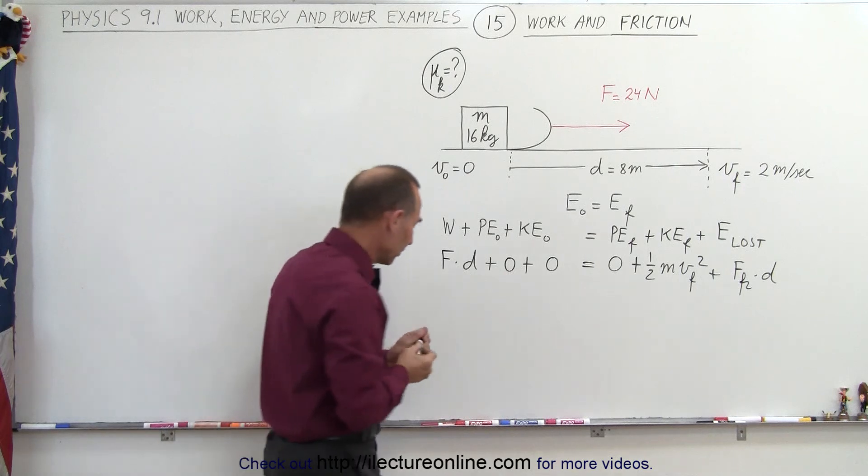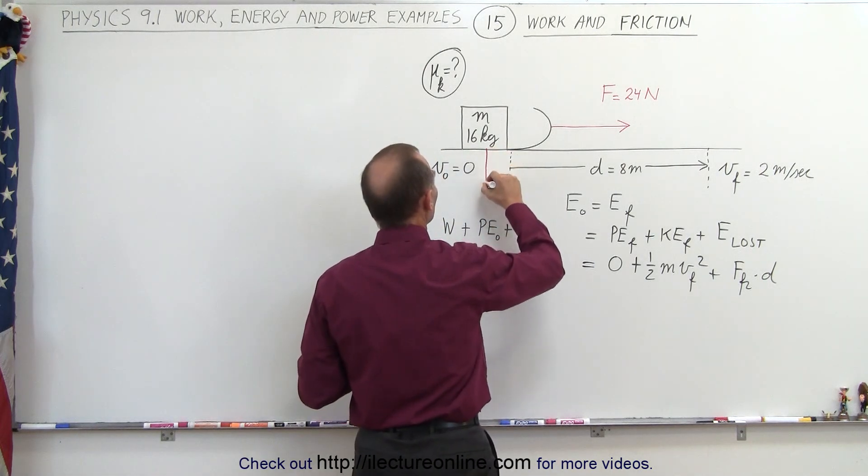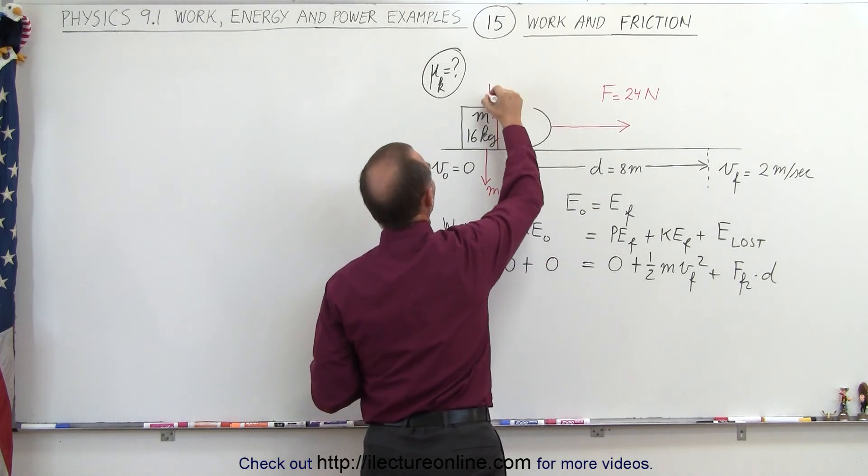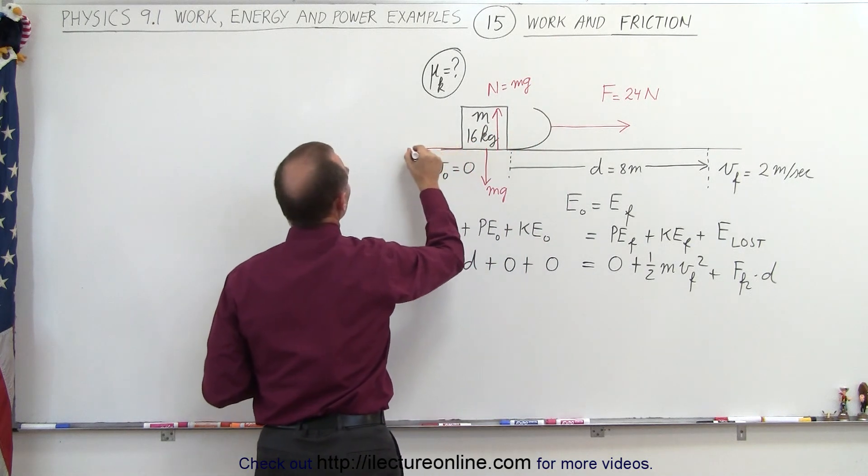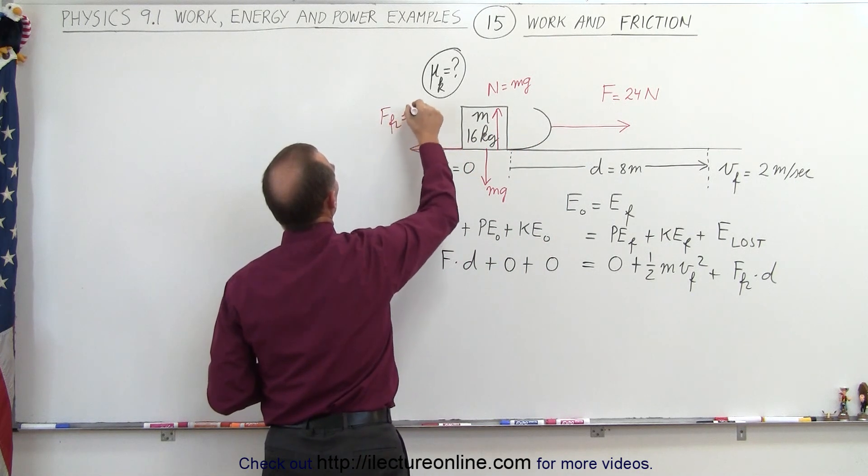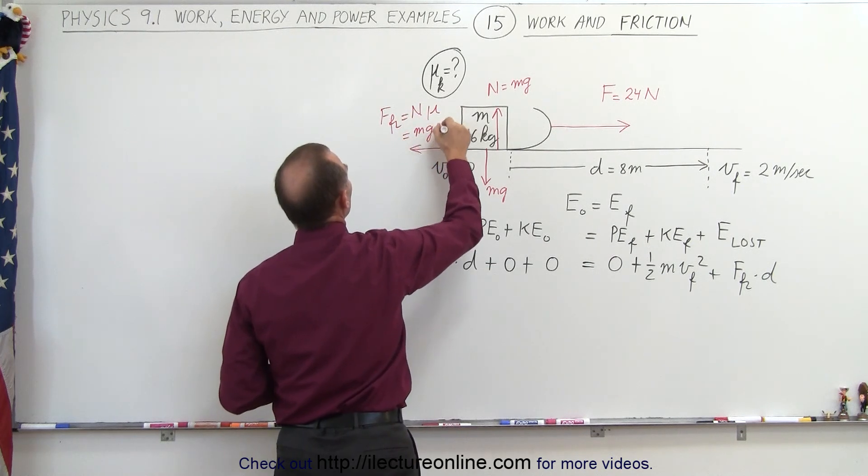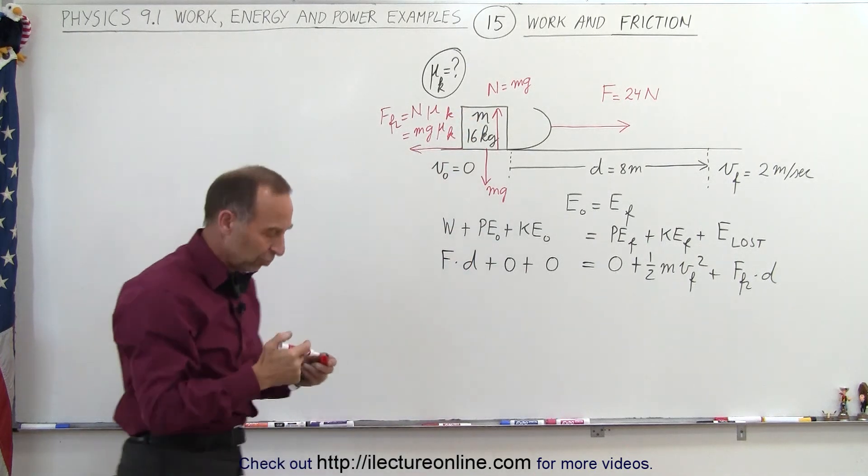How do you find the friction force? Well, first what we realize is that there's some weight pushing down on the ground, mg. There's a normal force pushing back, which is equal to the weight of the sled mg. And therefore, there's a friction force which is equal to the normal force times mu, which in this case is mg mu. And of course, we talk about mu sub k because the sled is moving.